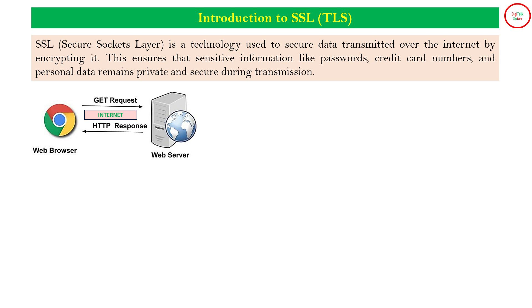For example, if you are going to access your bank's website from your web browser, the website is displayed to you from the data center of that particular bank. Whenever you enter information in the website — for example, your username and password — that username and password gets transferred to the data center of that bank over the internet, because you are connected to the data center via the internet, which is a public network. That data needs to be encrypted so that your data should not be compromised in between.